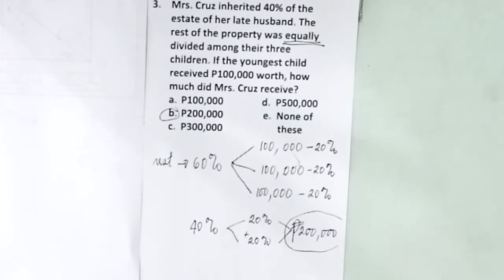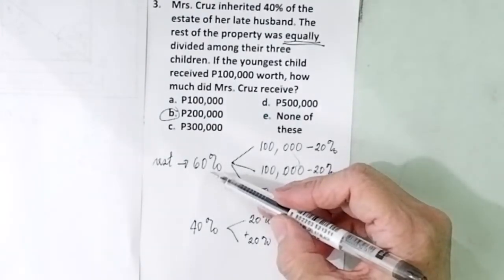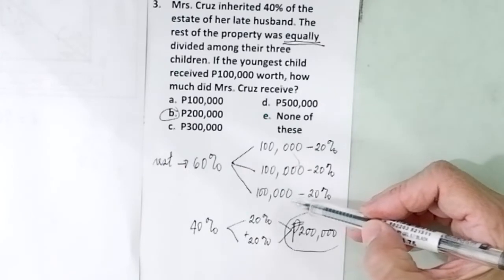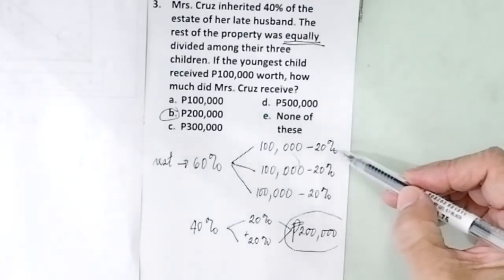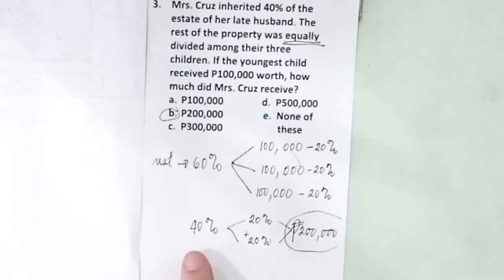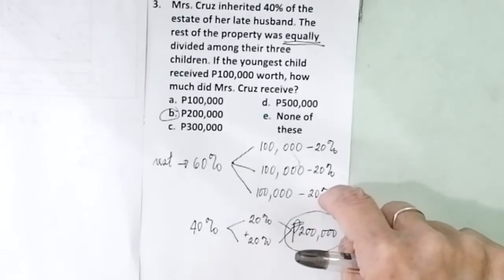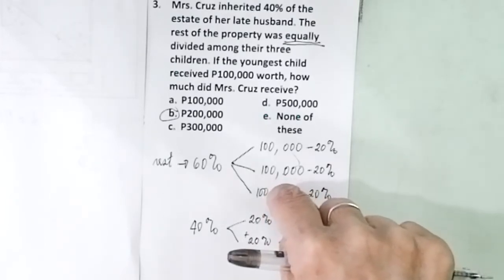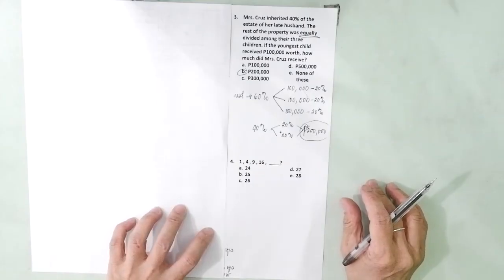Did you get that? Again, 60% divided by three children. So each child received 20%. Mrs. Cruz received 40%. That is, there are 20%. For every 20%, you get 100,000. So 100,000 times two is 200,000. Next, problem number four.